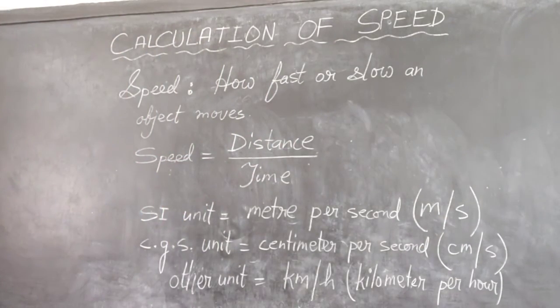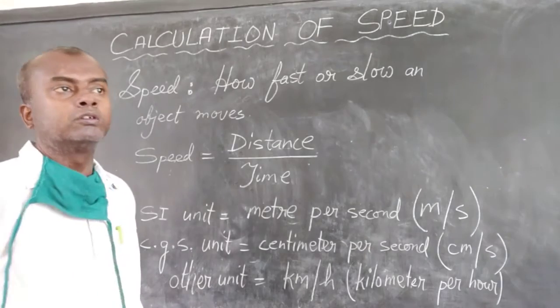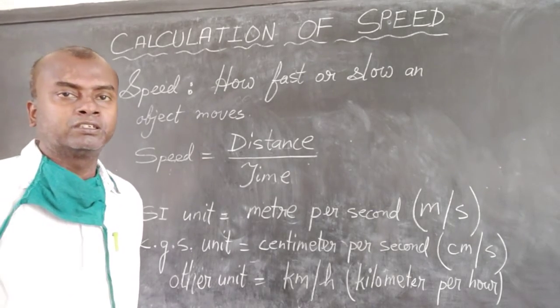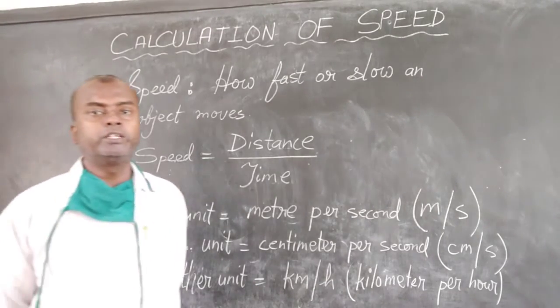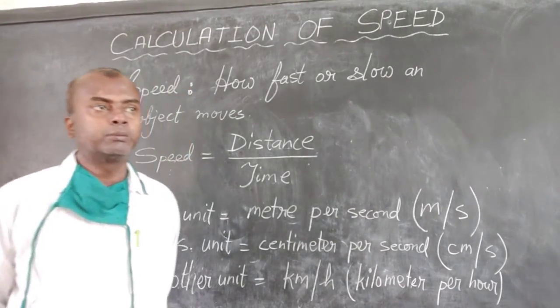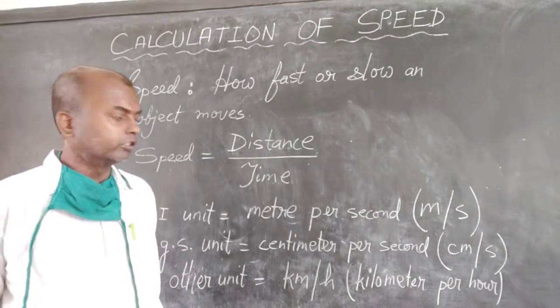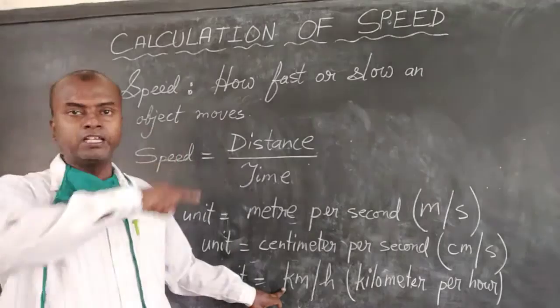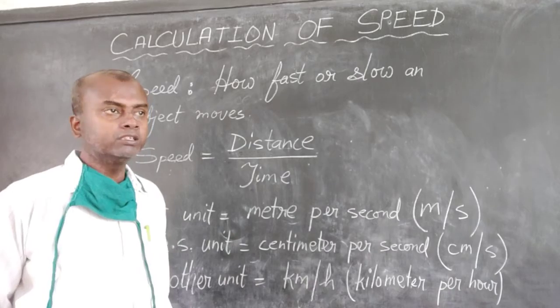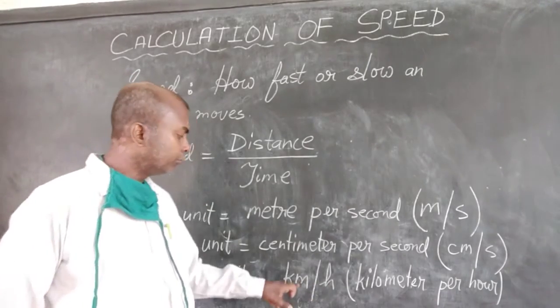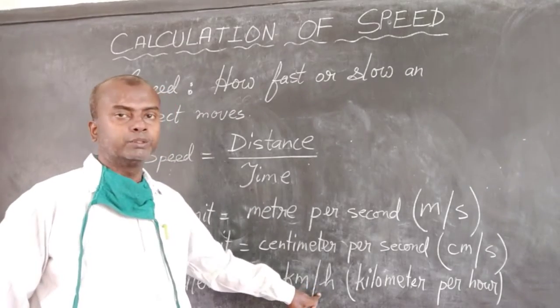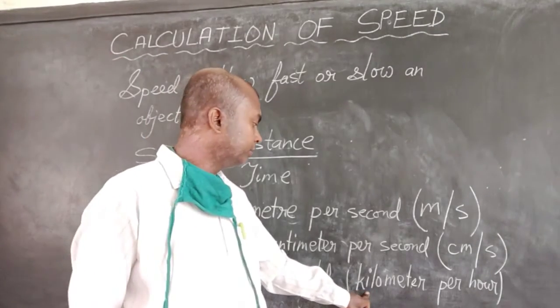There is one other unit also that we follow when we drive vehicles: kilometers per hour. You must have seen speedometers in vehicles, whether it is a scooter or a bike or a car or a truck or a train. There is a dial in the speedometer, and it indicates the speed in kilometers per hour—how many kilometers traveled in a given hour. So that is the other unit option.